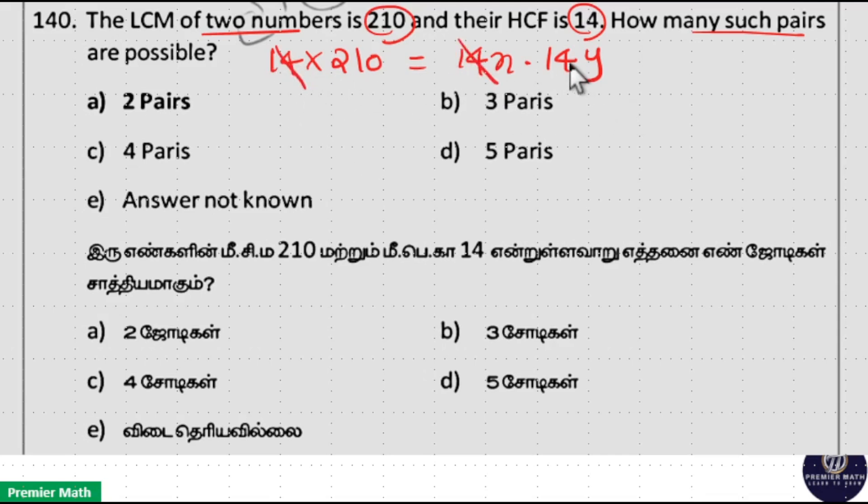Here 14, 14 cancel. 14 goes 15 times into 210, which means X into Y is 15. Now number of such pairs possible are: XY can be written as 1,15 and 3,5.